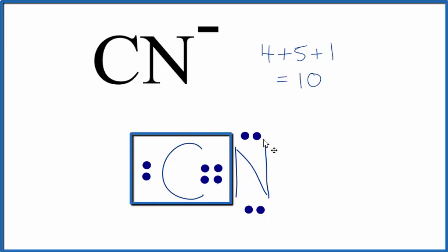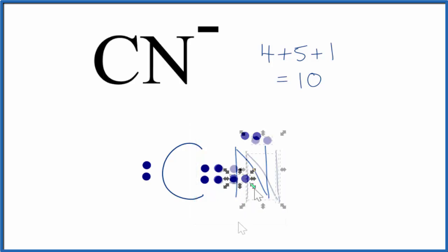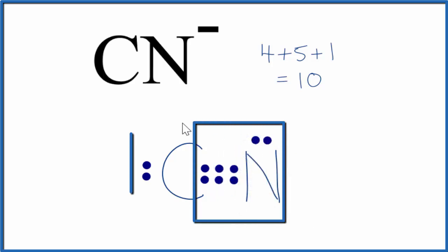Now carbon has six, nitrogen has eight. It's getting better. Let's move these between the carbon and the nitrogen. Now nitrogen has eight, carbon has eight.